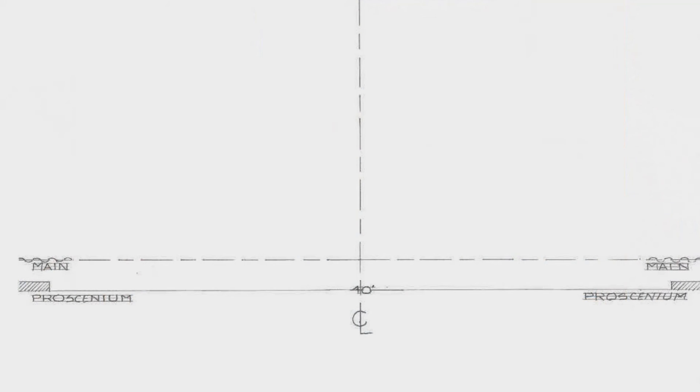For this lesson, what you'll need to show on your drawing is the proscenium opening, the position of the main curtain line, and the up and downstage center line.